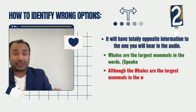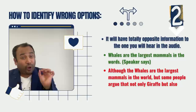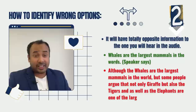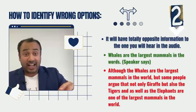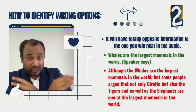Wrong answer type two: totally opposite or negative information. For example, the answer might say 'although whales are the largest mammals, some people argue that not only giraffes but also tigers and elephants are among the largest.' You heard about whales — where are the giraffes and tigers coming from? Cross those answers out immediately; they're giving you totally opposite information.